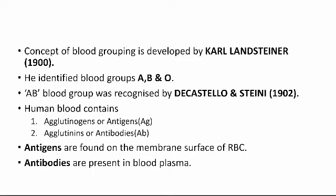The concept of blood grouping was developed by Karl Landsteiner in 1900. He identified three blood groups: A, B and O. The AB blood group was later recognized by Decastello and Sturli in 1902.